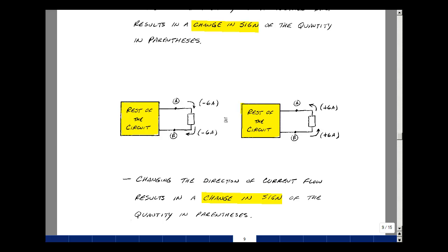If you had current flowing from A to B, and suppose that you measure that current and it turned out to be minus 6 amps. If you reverse the direction of the current arrow, then what you effectively do then is change the sign of what's in these parentheses. So you're getting a minus, a minus, or a plus 6 amps.